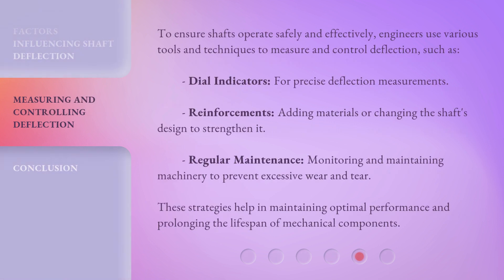To ensure shafts operate safely and effectively, engineers use various tools and techniques to measure and control deflection, such as dial indicators for precise deflection measurements, reinforcements — adding materials or changing the shaft's design to strengthen it — and regular maintenance, monitoring and maintaining machinery to prevent excessive wear and tear. These strategies help in maintaining optimal performance and prolonging the lifespan of mechanical components.